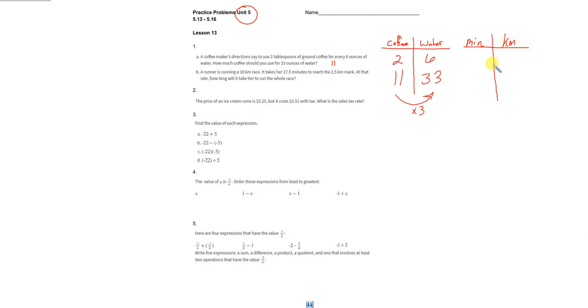It took them 17.5 minutes to get to the 2.5 kilometer mark. We want to know the relationship to run the whole race, which would be 10 kilometers. It would be nice to know the constant going this way so we could multiply by it and get from 10 to the minutes. To find that, we do two and a half divided into 17 and a half.